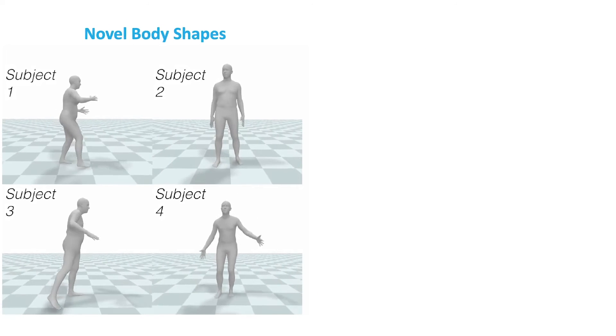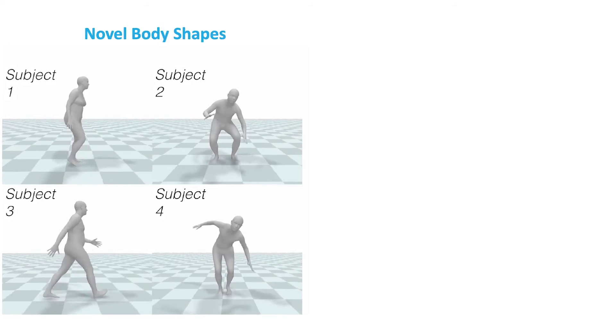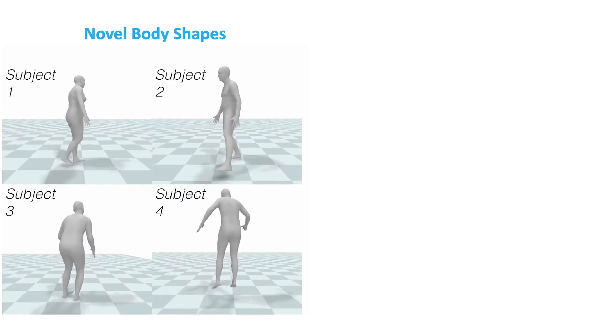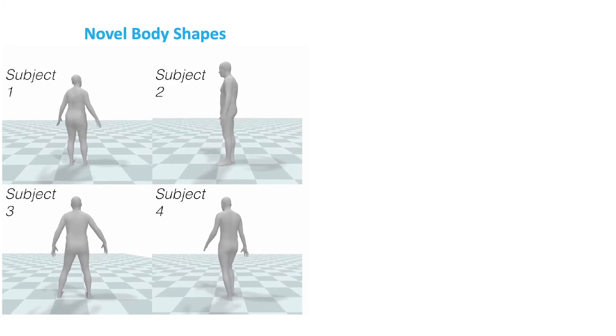As a result, Humor is a capable standalone generative model. In these examples, random motions are sampled for body shapes that were not seen during training. The motion is largely physically realistic, indicating the model has learned a distribution of plausible transitions as we desired.